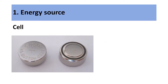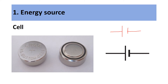Our first energy source is a cell. A cell stores chemical energy, which is converted into electrical energy when the cell is placed within an electrical circuit. The 2D symbol for a cell is represented as two lines with wires connecting on either side. It is important to make sure that there are no gaps between the wire and the cell.